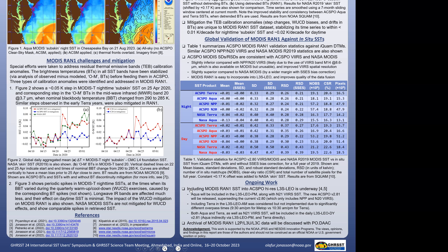As for ongoing work, we plan to include MODIS Run 1 SST into the ACSPO high-resolution L3S LEO. Aqua will be included in L3S LEO PM along with NOAA-21 VIIRS SST. The new ACSPO version 2.81 L3S LEO will supersede the current version 2.80, which includes NPP and NOAA-20. Including Terra in L3S LEO AM was considered but not implemented due to the significantly different overpass time — 9:30 for METOP versus 10:30 for Terra. However, Terra, Aqua, and NOAA-21 will all be included in the daily product, L3S LEO daily version 2.81. Finally, archival of the MODIS Run 1 L2P, L3U, and L3C data will be discussed with PODAAC; it is currently available on CoastWatch in L3C format.